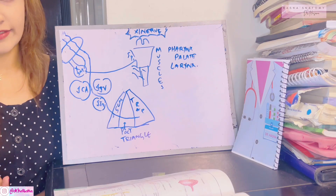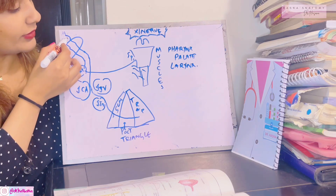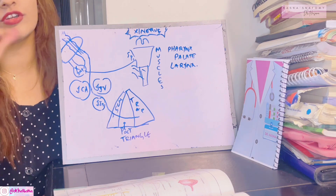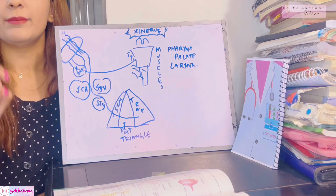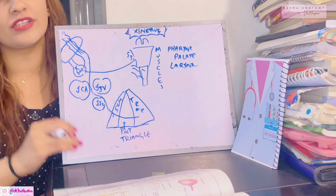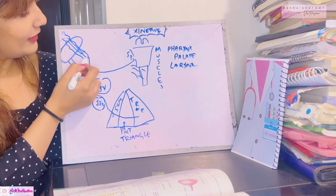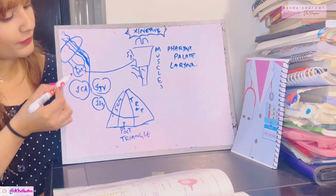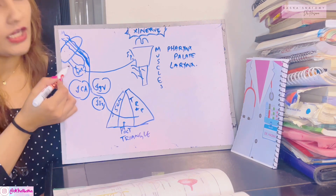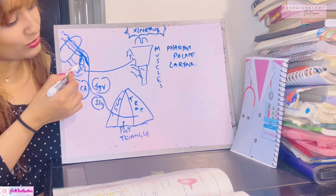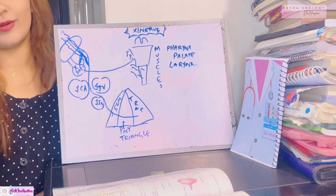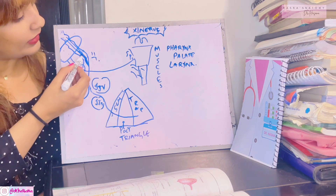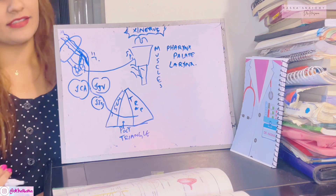Extracranially, the cranial and spinal roots travel fused together within the nerve, but only for a short while — they are meant to separate. When the inferior ganglion of the vagus nerve is present beneath the jugular foramen, the cranial root leaves the spinal root and the two roots separate.